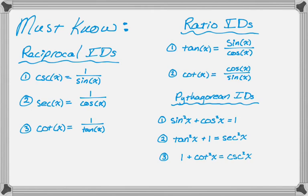You have ratio identities, so tangent is sine over cosine and cotangent is cosine over sine. Then you have three Pythagorean identities: sine squared plus cosine squared equals one is the most famous, then tan squared plus one is secant squared, and one plus cotangent squared is cosecant squared.